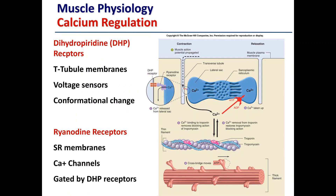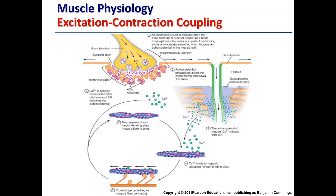Once cytosolic calcium concentrations are high, calcium binds to the available troponin binding sites. That causes a structural change which removes tropomyosin's blocking of the myosin binding sites. This then allows myosin heads to interact with actin at those binding sites, forming a cross-bridge to enable muscle contraction and shortening.